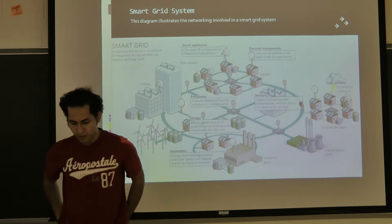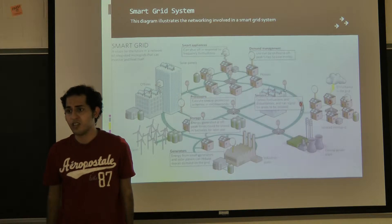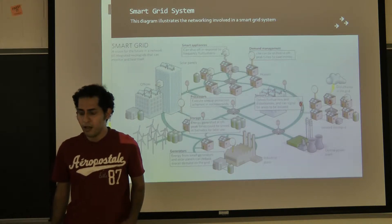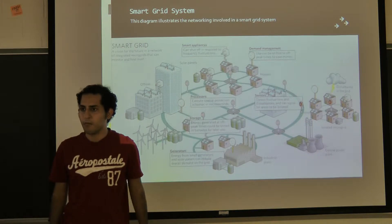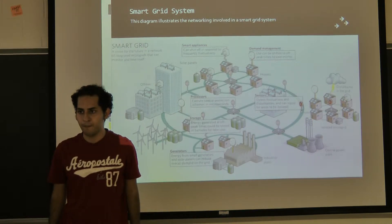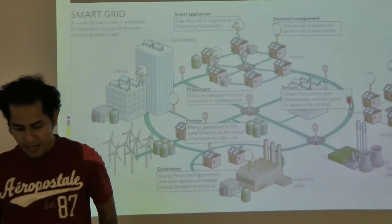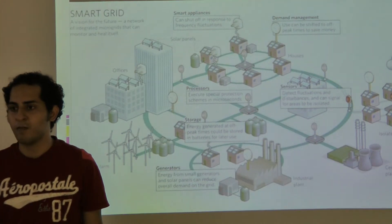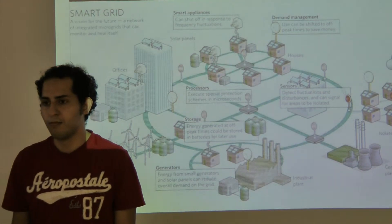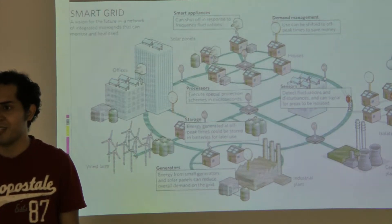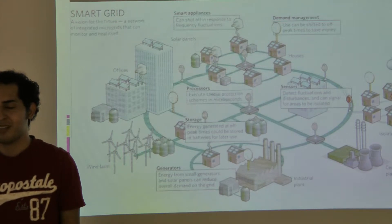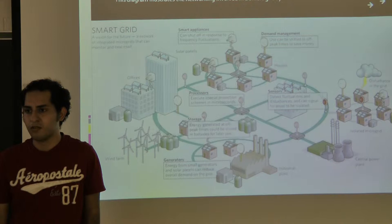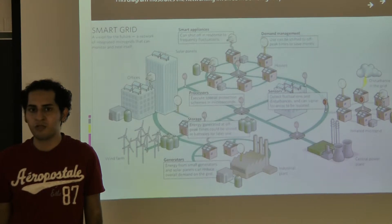The benefit of using the smart grid is that it can respond to any events that occur in the power delivery system, and that can save energy and money. According to a study by the U.S. Department of Energy, smart grid technology can save between 47 to 100 billion dollars in the next 20 years.